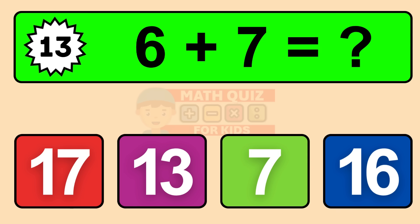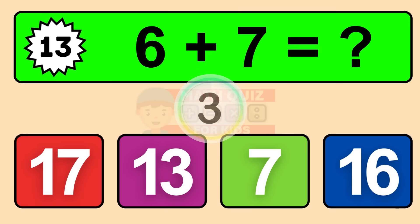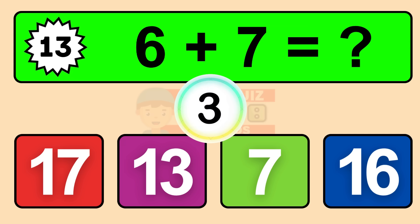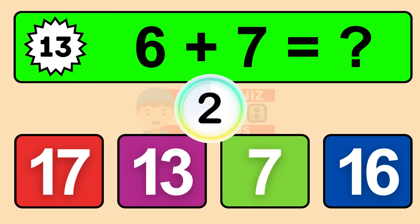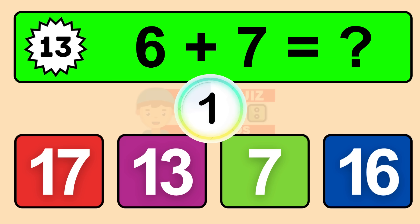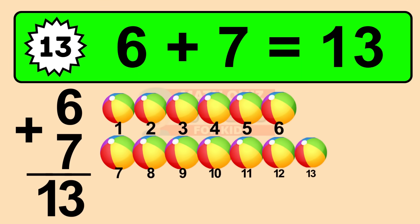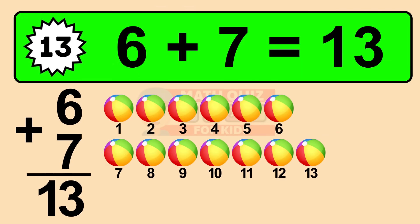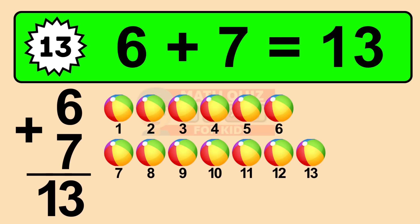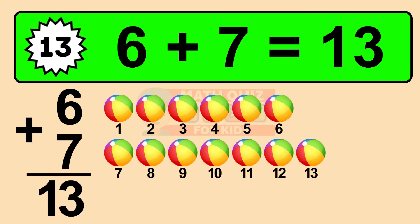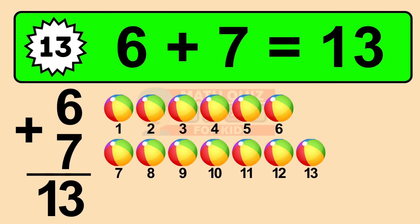Question thirteen: six plus seven equals what? The answer is six plus seven is thirteen. Let's count it. One, two, three, four, five, six, seven, eight, nine, ten, eleven, twelve, thirteen.